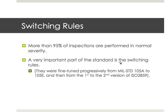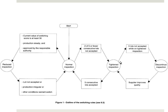Now let's talk about switching rules. More than 95% — I would say maybe 99% — of inspections in Asia are conducted at normal severity. But a very important part of the standard is that there are three types of severities. It starts with normal severity, but if the supplier achieves a certain score, it goes to reduced inspection, meaning you pick fewer samples and it's even easier for the supplier to pass.